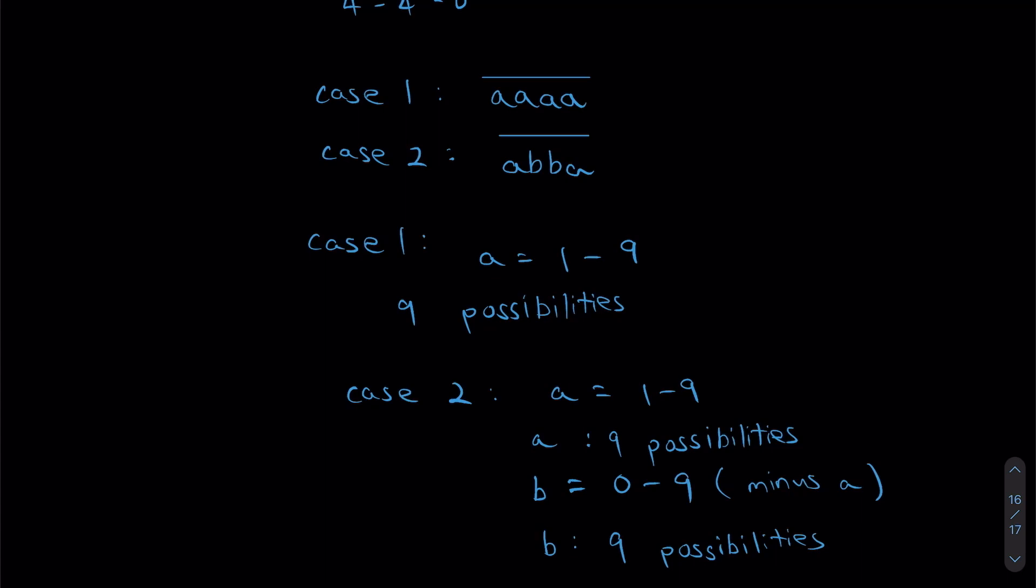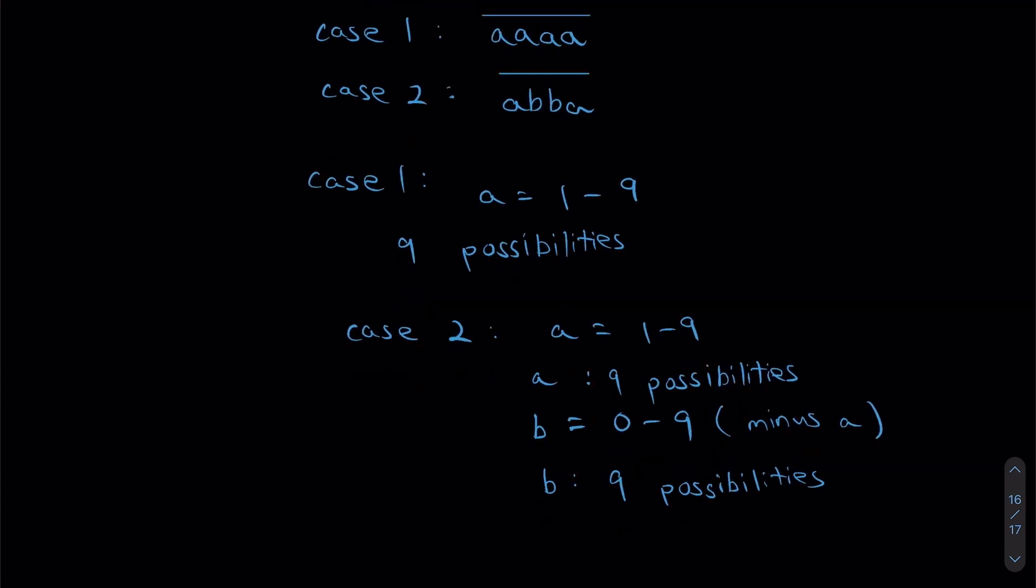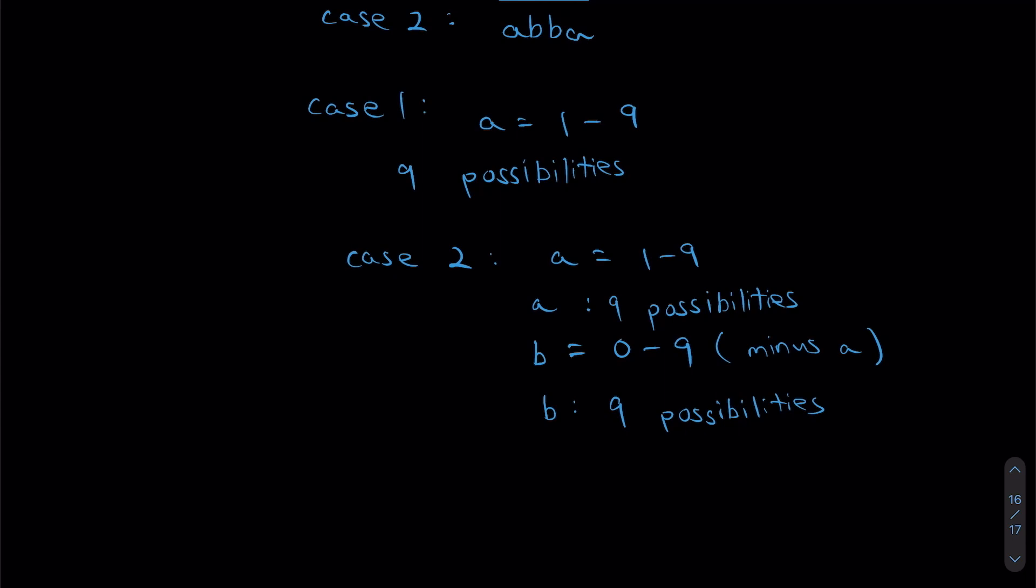So how many possibilities do I have in total for case 2? A has 9 possibilities. B has 9 possibilities. So the total possible outcomes is 9 times 9, which is 81.